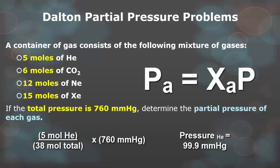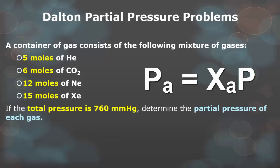Let's do the second one for you. If you have 6 moles of carbon dioxide, again, you're doing 6 over 38 moles. When you do that, and then you multiply it by the total pressure of 760, you get 120 millimeters of mercury. As you progressively do these, you'll notice that if you then add up the sum of all the millimeters of mercury, you should then finally get 760. You guys can do the 12 moles of neon and the 15 moles of xenon on your own right now.